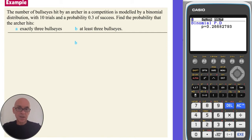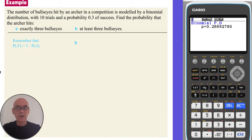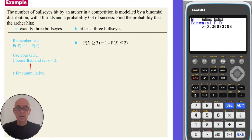To find the probability that the archer hits at least three bullseyes, we could find P(X=3), P(X=4), ..., P(X=10) and add them all up. Or we can use the complement rule and find the required probability by subtracting the probability that X is less than or equal to 2 from one. Your calculator can also calculate cumulative probabilities for the binomial distribution.